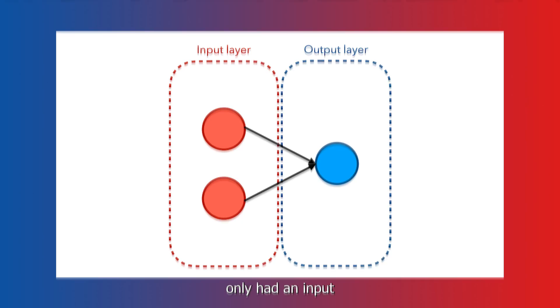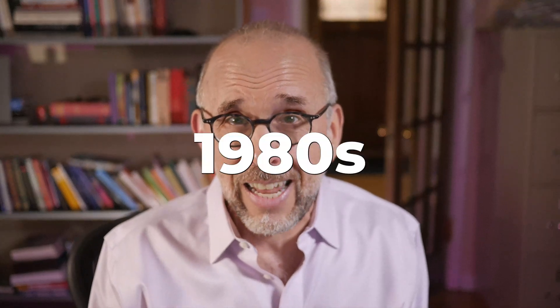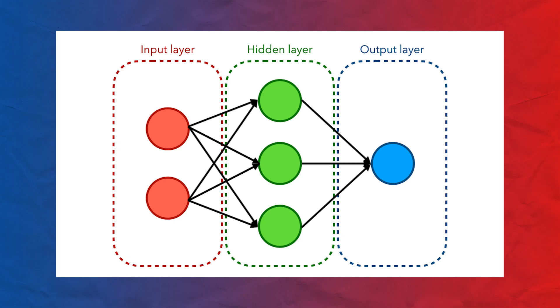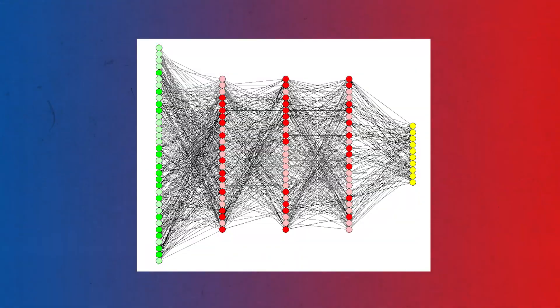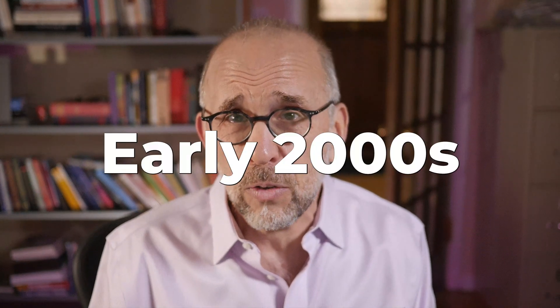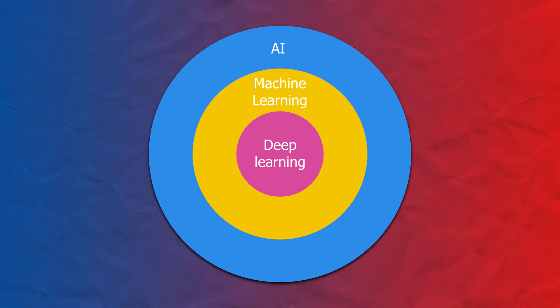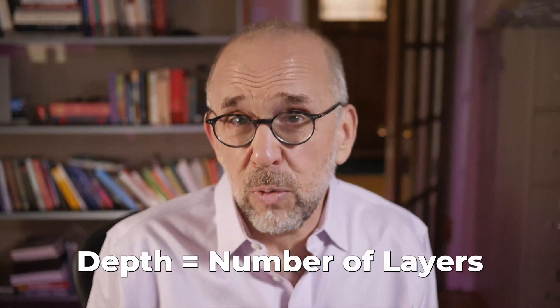The third term is deep learning. Early neural networks only had an input layer and an output layer — simple two-layer networks called perceptrons. The first neural network I programmed in the 1980s had three layers: an input layer, a hidden layer, and an output layer. Modern neural networks have tens, dozens, hundreds, or even thousands of layers. The main innovation in the early 2000s that led to modern AI was the hardware and software that made it possible to train these very deep, multi-layered neural networks. A deep learning network uses modern hardware and software to train neural networks with many, many layers — and depth refers to the number of layers.